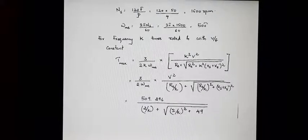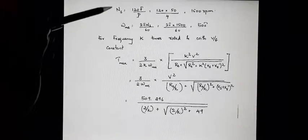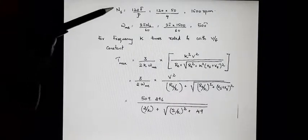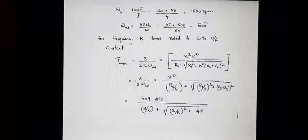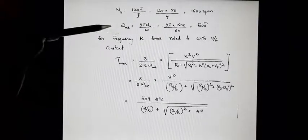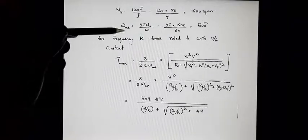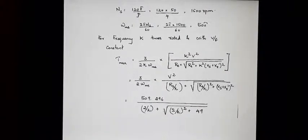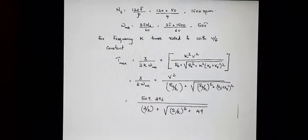The motor is controlled by V/f method of speed control. Initially we will calculate the synchronous speed in radians per second. The synchronous speed in rpm is 1500 rpm, and we use the relation ω = 2πN/60 to find the synchronous speed in radians per second. From the analysis of induction motor session, you will be aware of the relation for maximum torque.